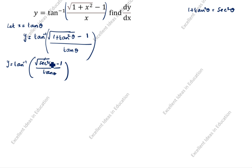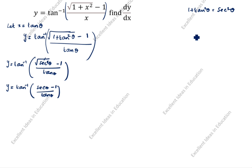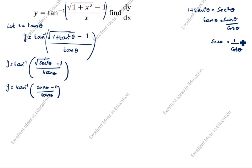The square root cancels with the square, so the next step gives y is equal to tan inverse of secant theta minus 1, divided by tan theta. Now we write tan theta as sin theta divided by cos theta, and secant theta as 1 divided by cos theta.